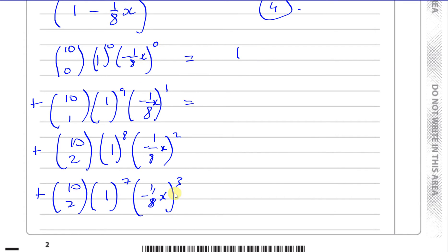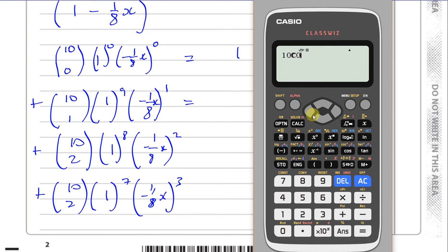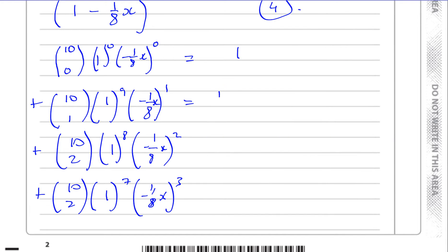That's all going to be 1, as we saw from the first thing. And over here, we're going to have 10, 1, which is going to give me 10. So that's 10 times, and 1 to the power of 9 is 1. So you're going to have 10 times 1 times minus 1 over 8x. So you end up with, that simplifies to minus 5 over 4x.